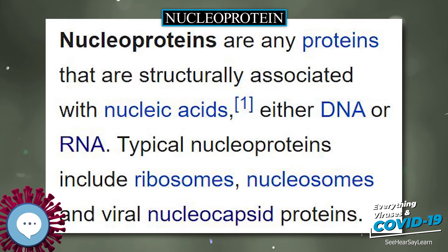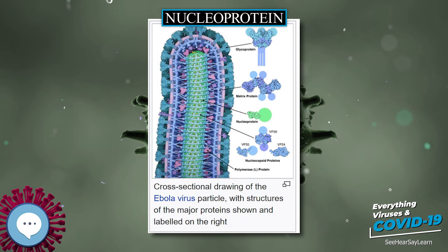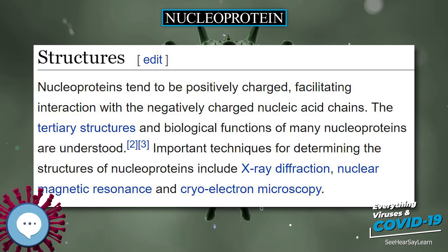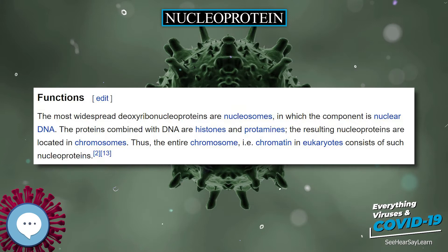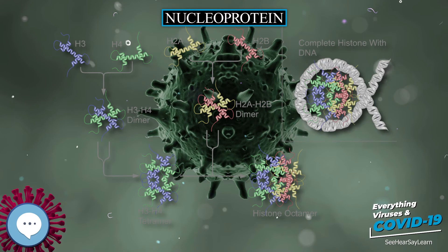Ribonucleoproteins. A ribonucleoprotein, RNP, is a complex of ribonucleic acid and RNA-binding protein. These complexes play an integral part in a number of important biological functions that include DNA replication, regulating gene expression, and regulating the metabolism of RNA. A few examples of RNPs include the ribosome, the enzyme delomerase, vault ribonucleoproteins, ribonuclease P, HNRNP and small nuclear RNPs, SNRNPs, which have been implicated in pre-mRNA splicing, spliceosome, and are among the main components of the nucleolus.